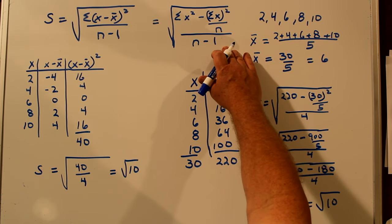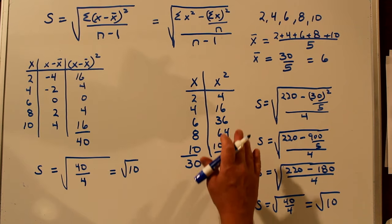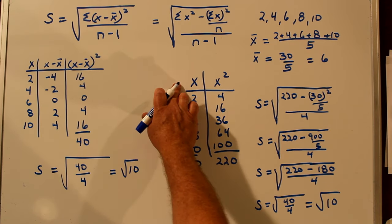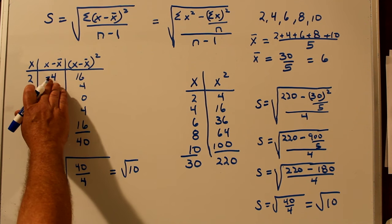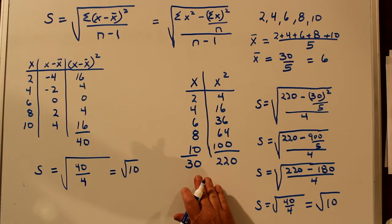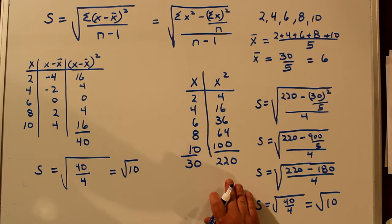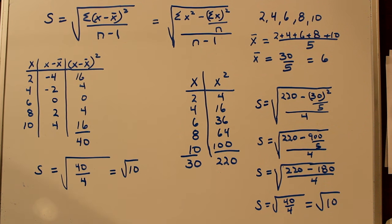Why is this one called the shortcut method? Well, if you have a list of 100 numbers or 1,000 numbers, it's much easier to find X and X squared than it is to find the mean, the difference from the mean, the square of the difference from the mean, which gives you the standard deviation this way. You simply need to know X and X squared and their sums. So there's two ways to find the standard deviation. Thank you.